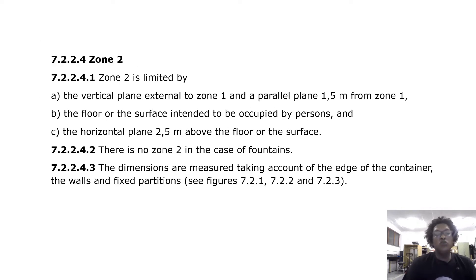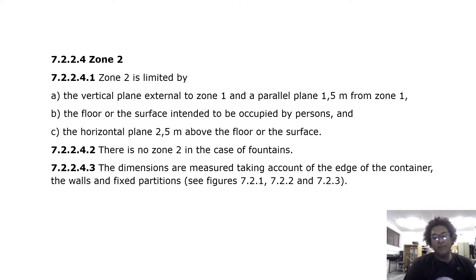Zone 2 is limited by the vertical plane external to zone 1 and a parallel plane 1.5 meters from zone 1, the floor or surface intended to be occupied by persons, and the horizontal plane 2.5 meters above the floor or surface. There is no zone 2 in the case of fountains. The dimensions are measured taking account of the edge of the container, the walls and fixed partitions — see figures 7.2.1 to 7.2.3.